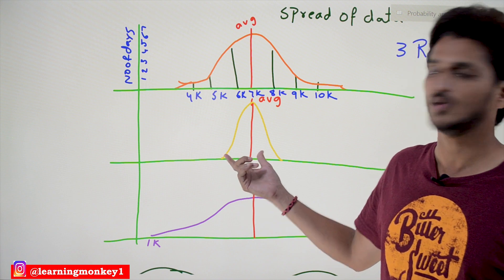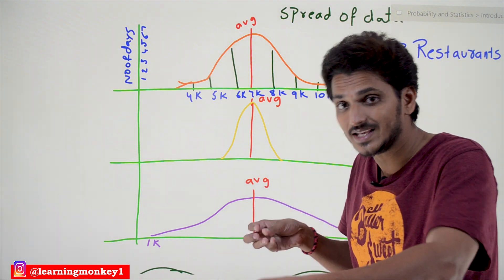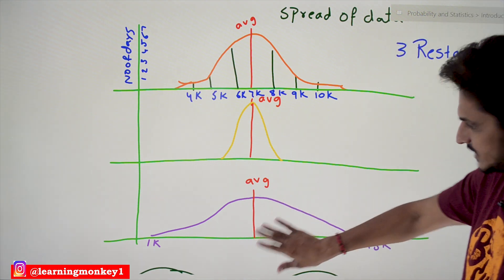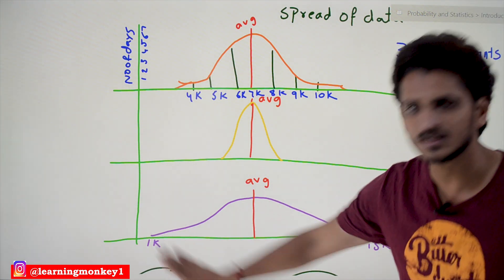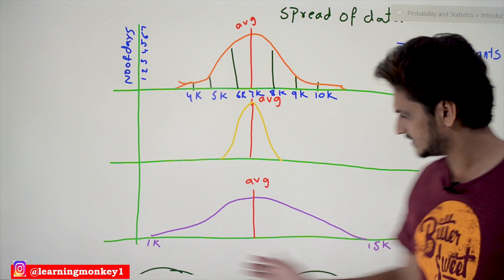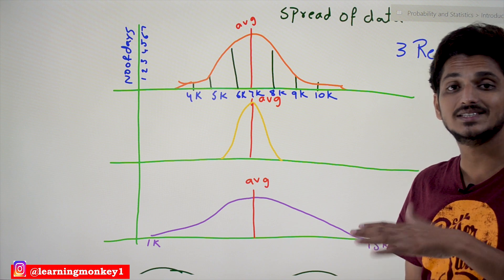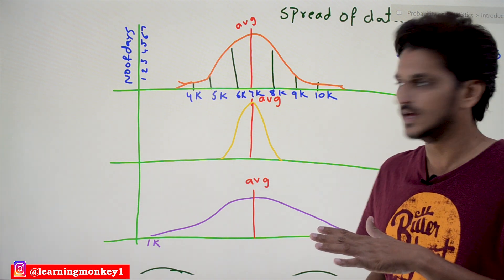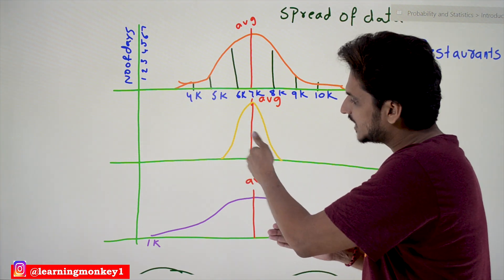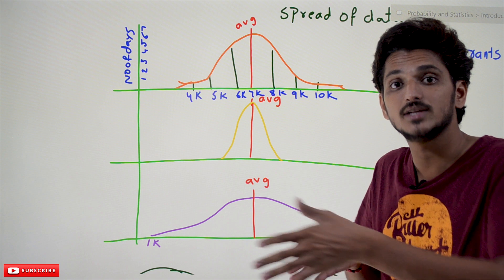This first restaurant is the good one to buy — why? Because the spread of the data from the average is less compared to the other two restaurants. If the spread of the data is large, even though the average is 7k, some days you are getting 1k, some days 15k, some days 2k — your business is not stable. But with this restaurant, values are almost all near 7k, 8k, 9k, 6k — your business is stable.